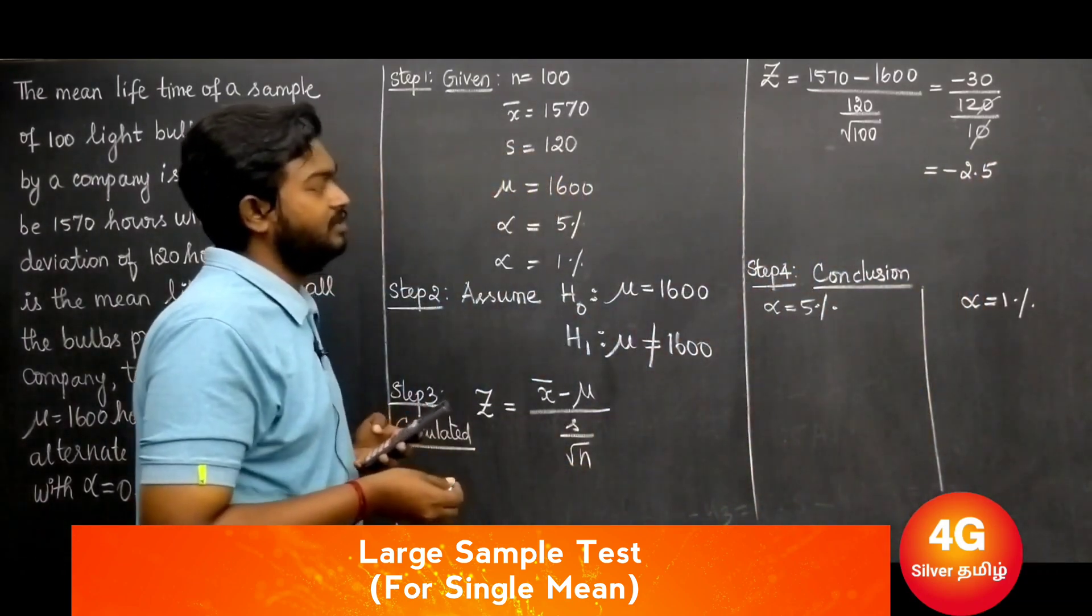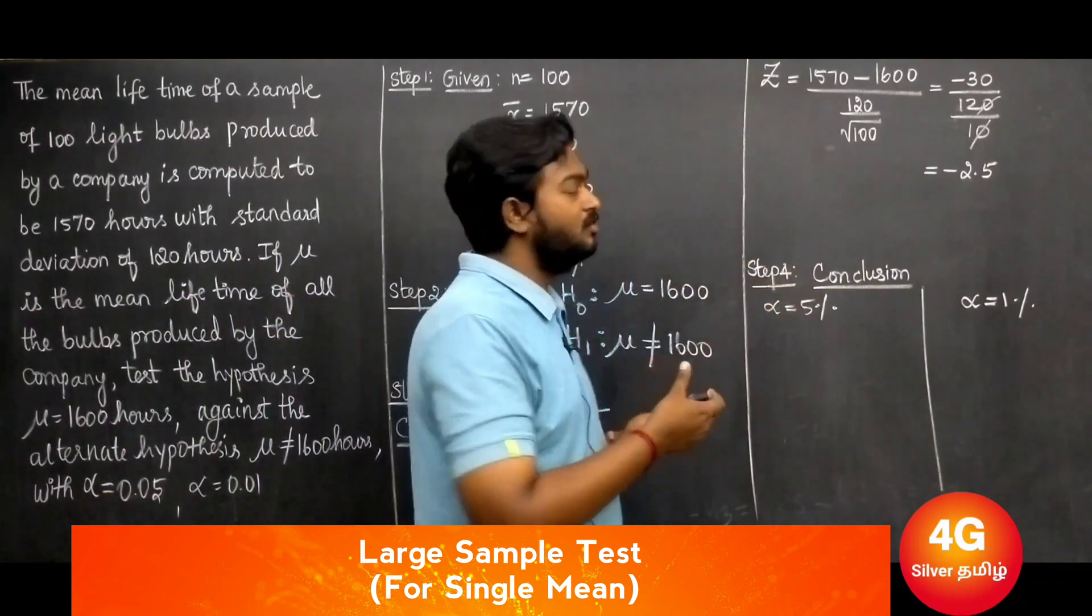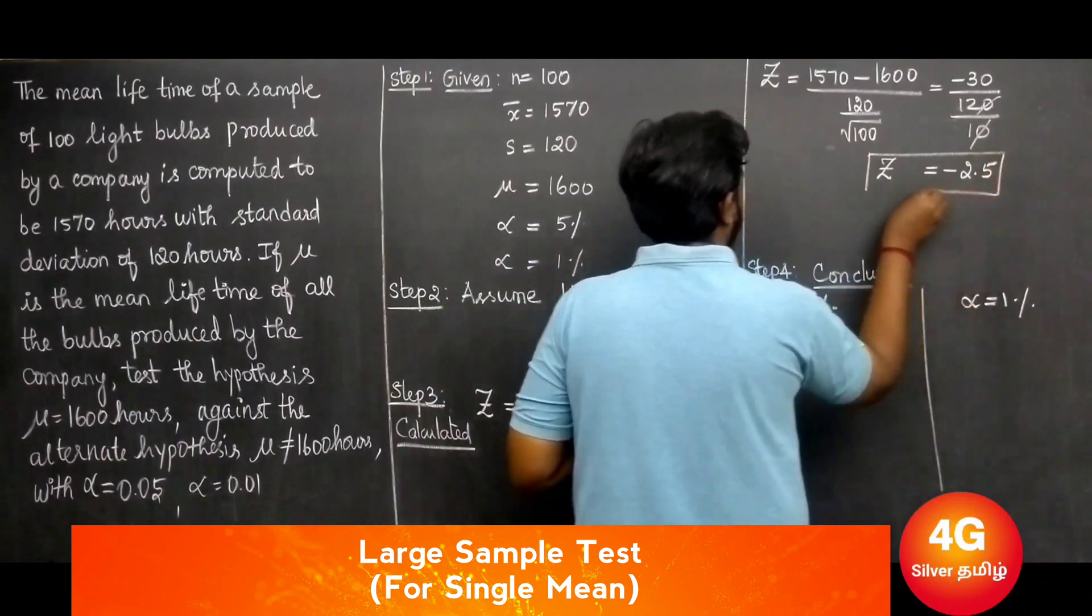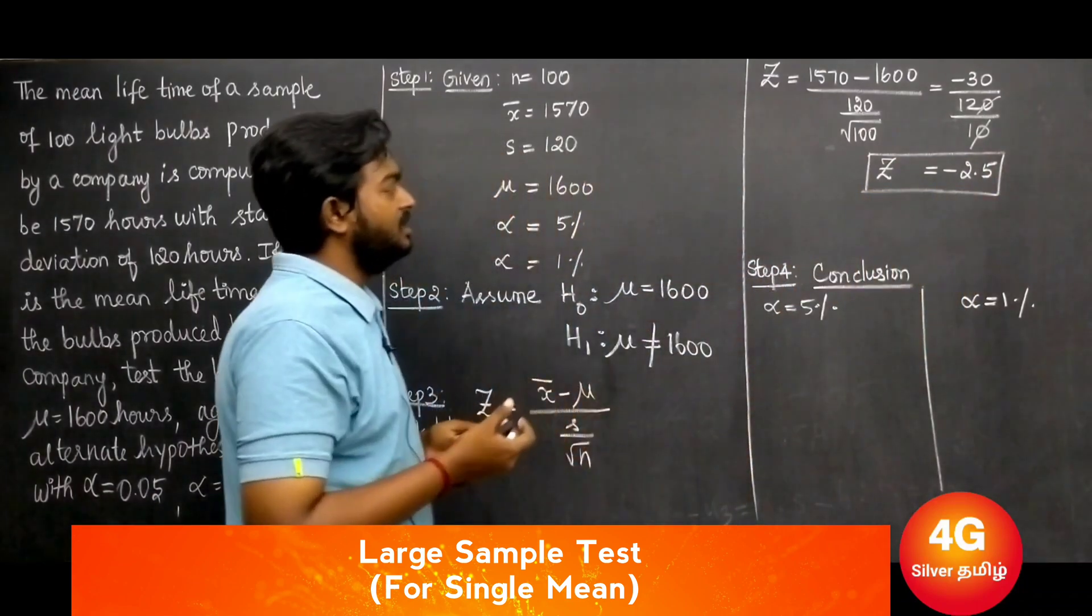This equals minus 2.5. The calculated z value is minus 2.5. Step four: conclusion.